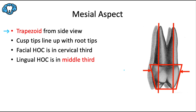The side view is a trapezoid — this is an arch trait for all maxillary posterior teeth. Mandibular posterior teeth take on a totally different shape, so stay tuned. Remember: all maxillary posterior teeth are trapezoidal from the side view. The cusp tips should line up with the root tips — facial to facial and lingual to lingual. The facial height of contour is in the cervical third, and the lingual height of contour is in the middle third. These two points are true for almost all posterior teeth.